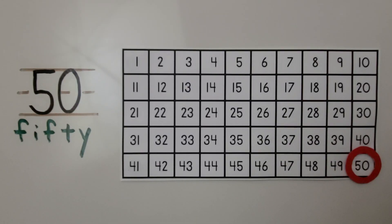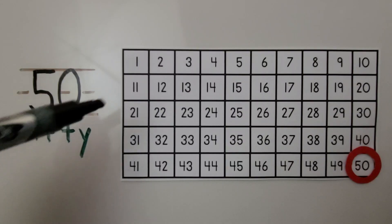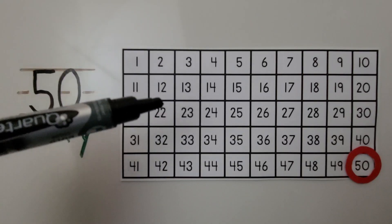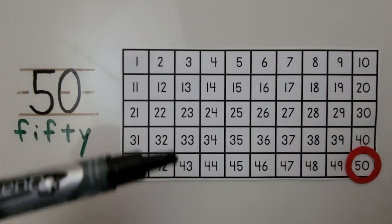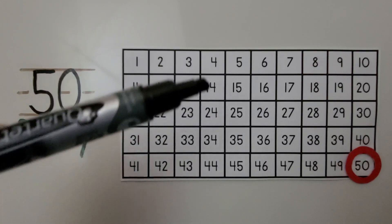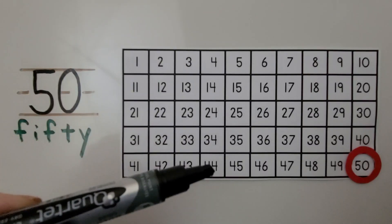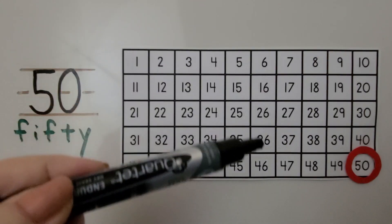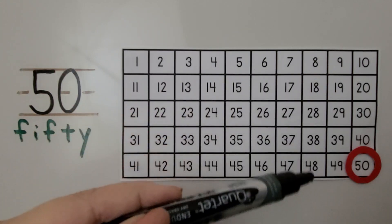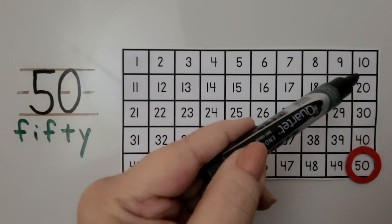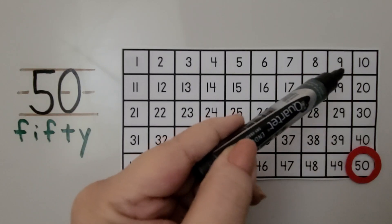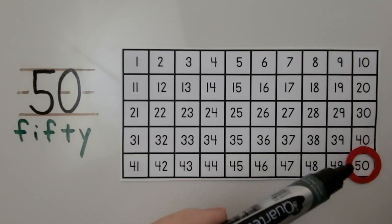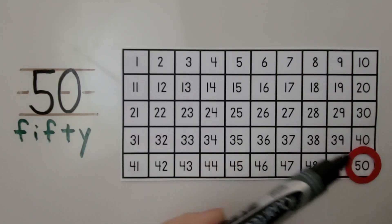If you look at the columns going down, all the numbers end with a 1. In the next column they all end with a 2, then a 3, a 4, a 5, a 6, a 7, an 8, a 9. And these all end with a 0. And if you look at the number in front, it starts with a 1, starts with a 2, starts with a 3, starts with a 4, starts with a 5.